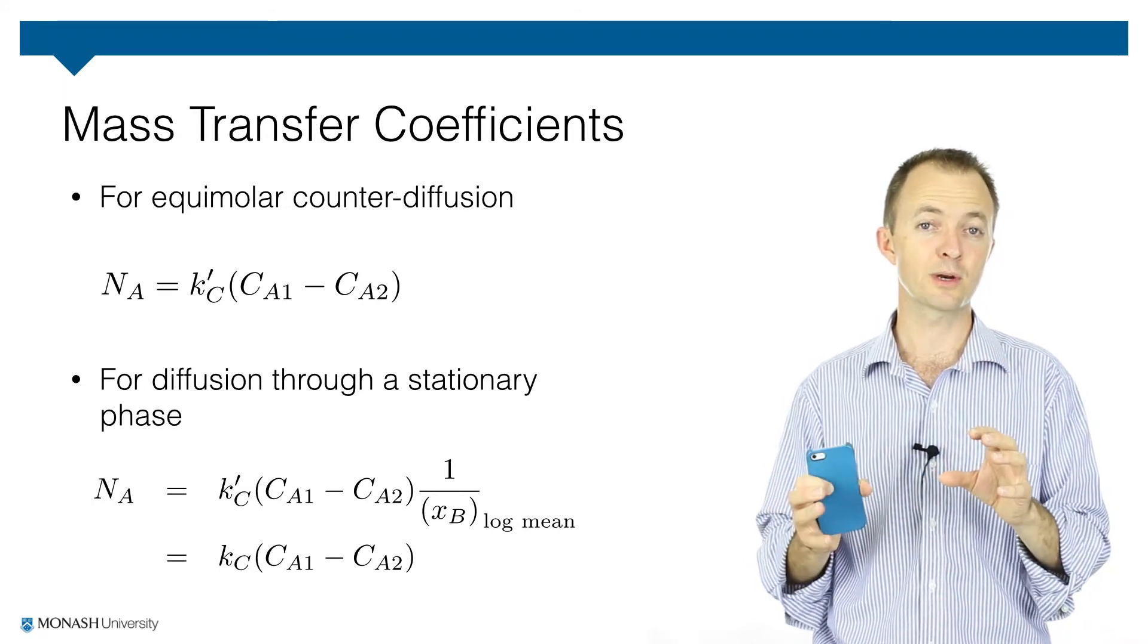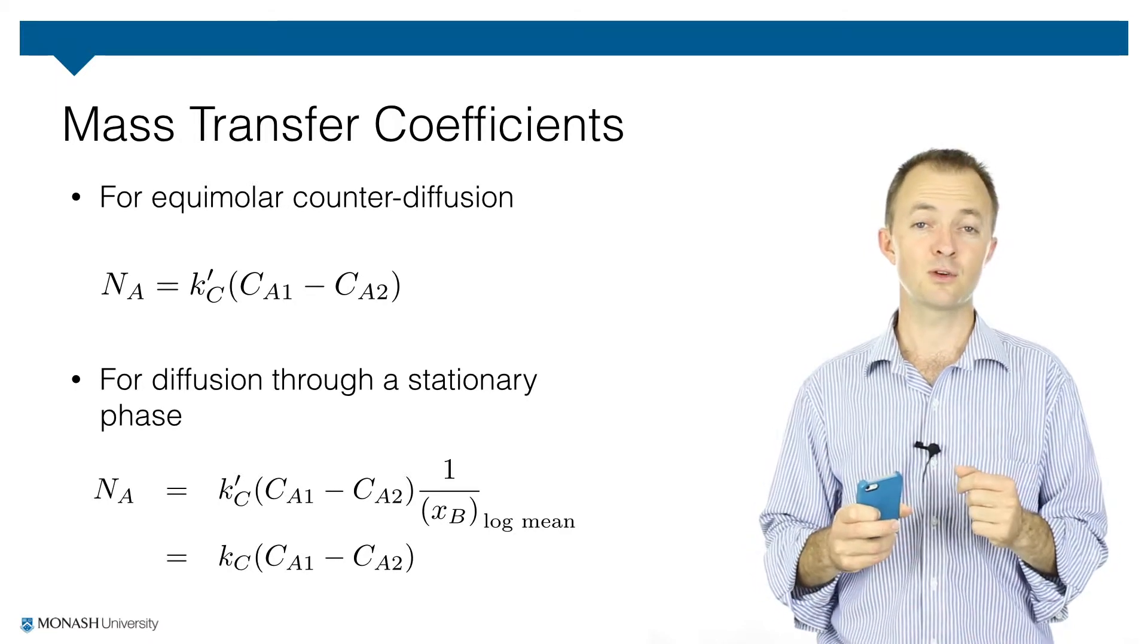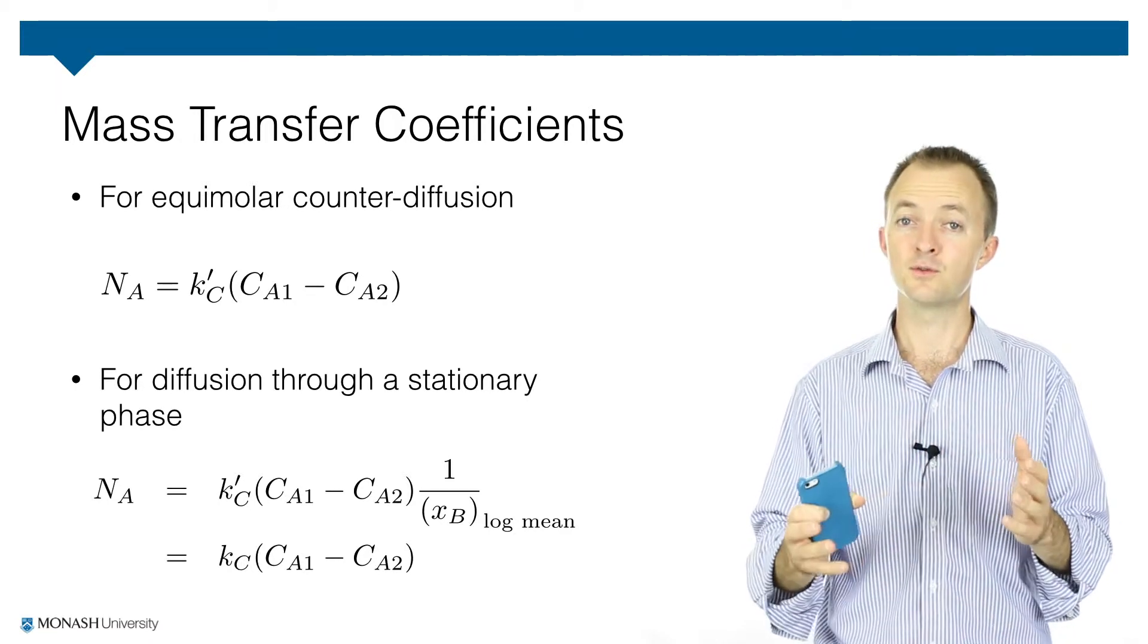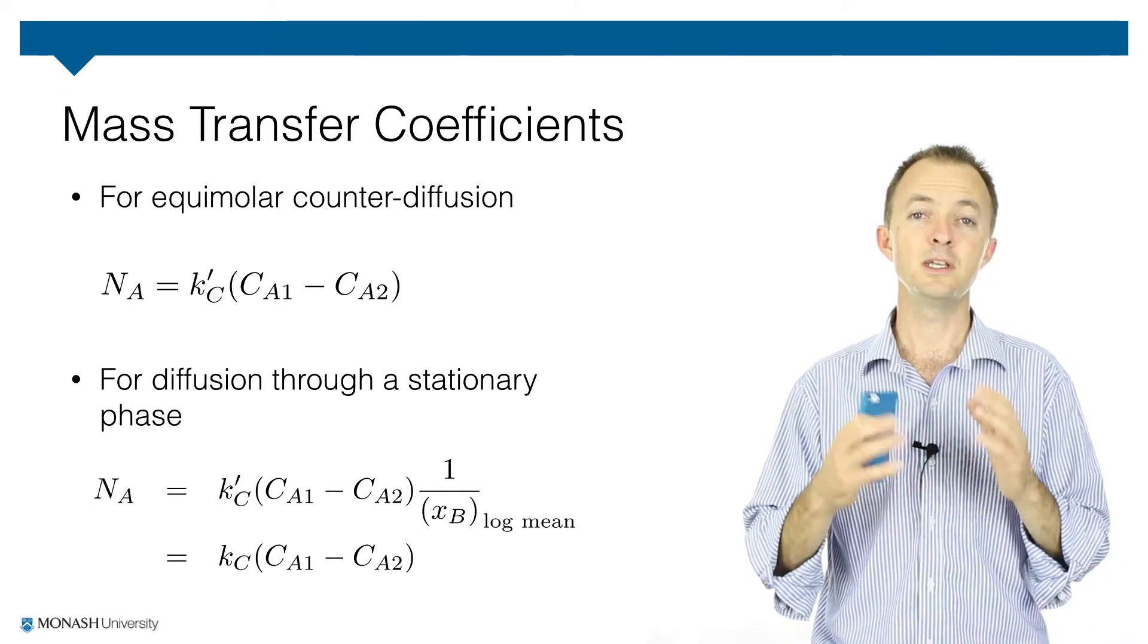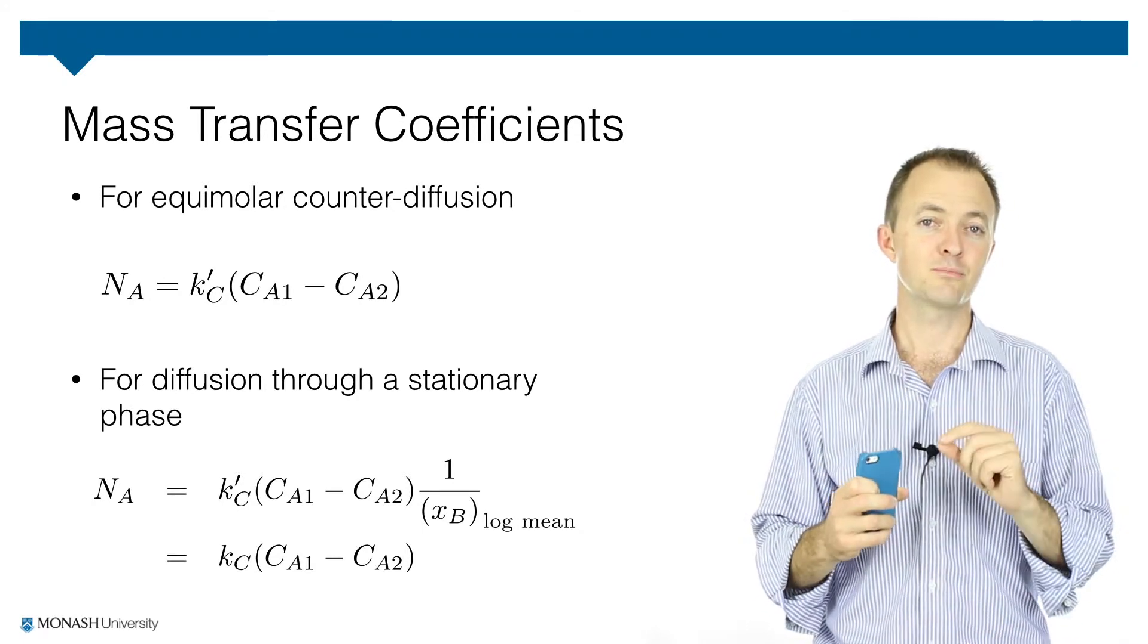with the log mean correction factor to define a new mass transfer coefficient for the case of diffusion through a non-diffusing phase, or a stagnant phase B, and we denote that one without the prime or the apostrophe.